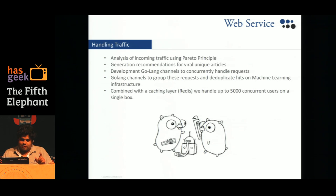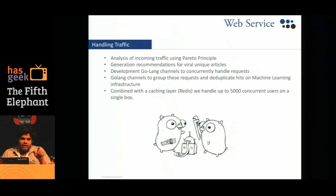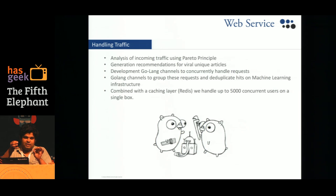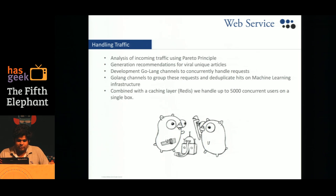There was a specific characteristic of this traffic: although there could be 10,000 concurrent users at a time, the number of unique articles being queried was only in the hundreds. We wanted to exploit this property, so we built a pub/sub style web server that deduplicates requests and reduces the load on the machine learning server, then sends the output to all subscribers.